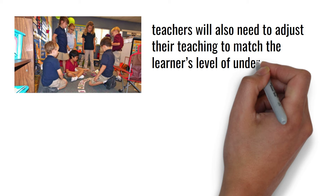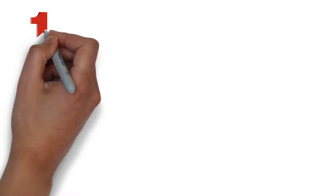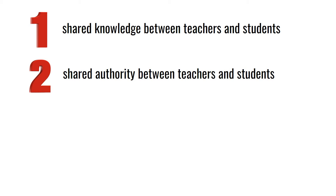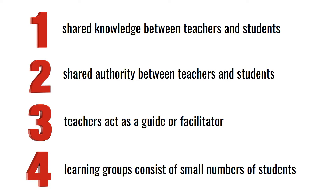The constructivist classroom relies mainly on four key areas for it to be successful. First, shared knowledge between teachers and students. Second, shared authority between teachers and students. Third, teachers act as a guide or facilitator. And fourth, learning groups consist of a small number of students.